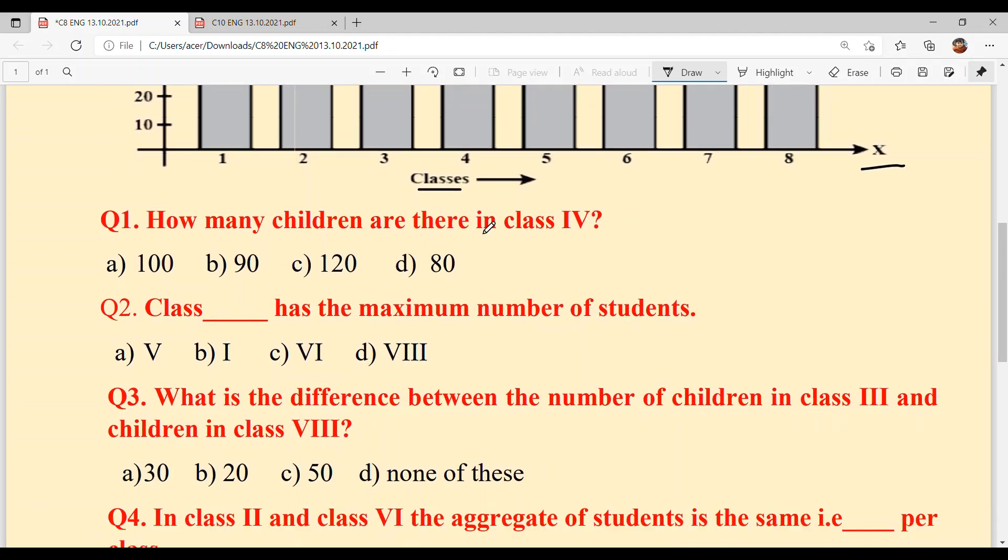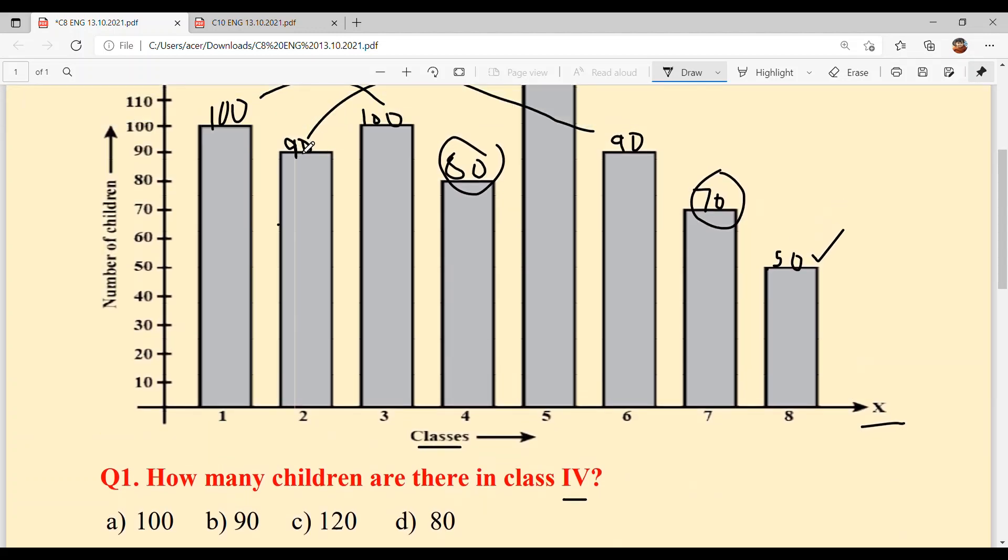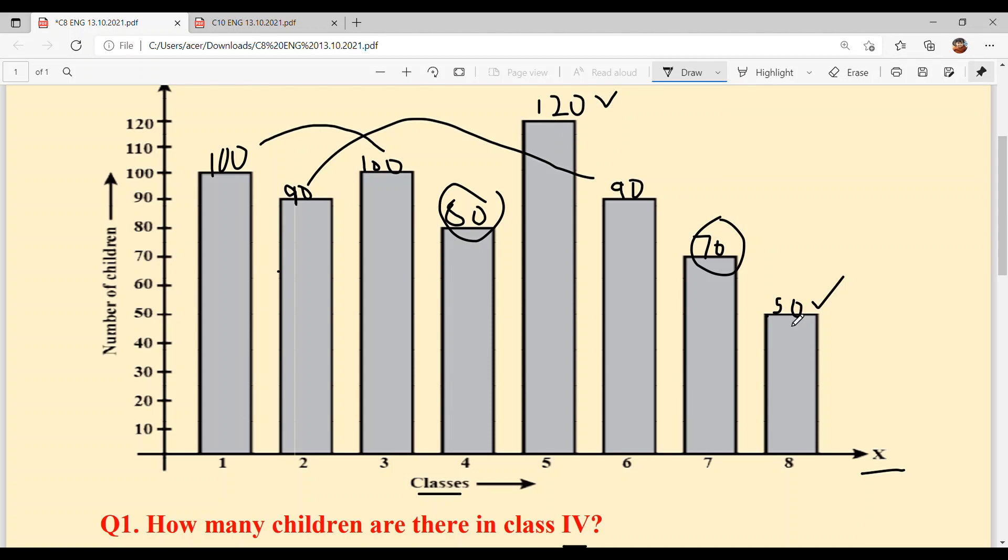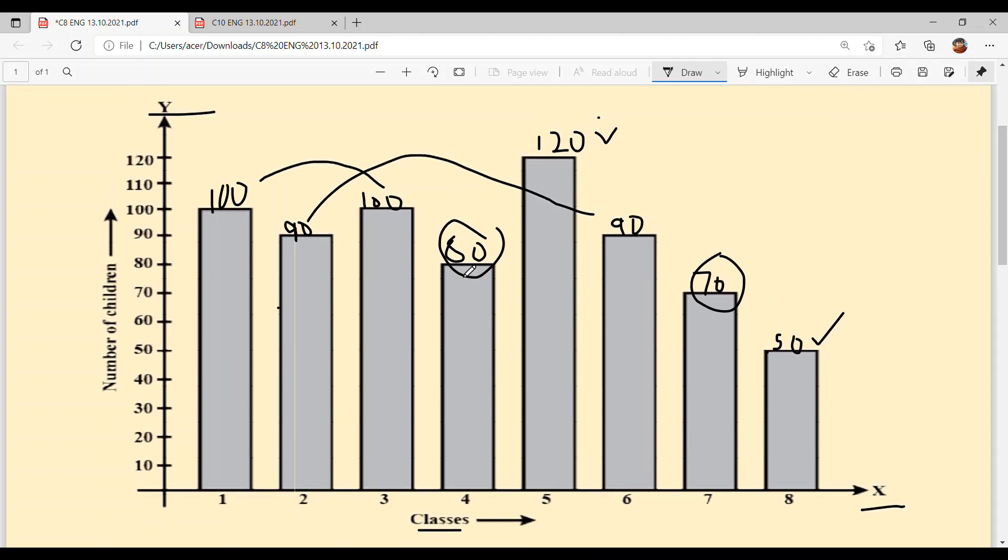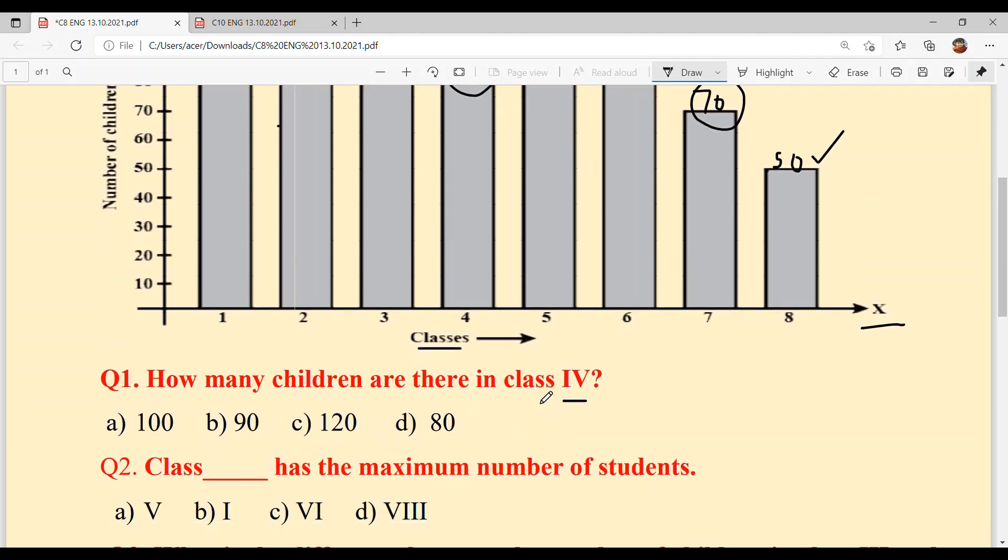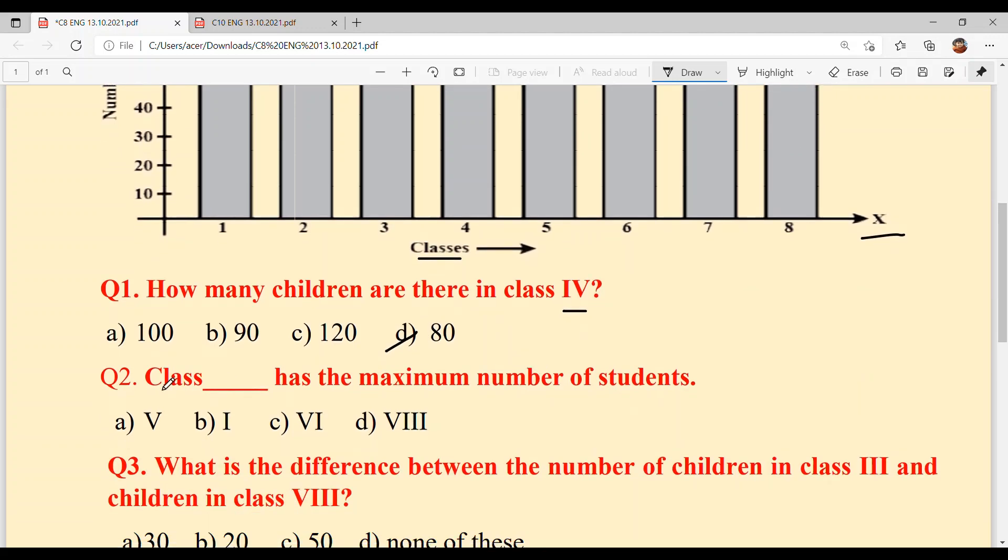How many children are there in class fourth? Make sure you write the numbers on your bar graph so you can easily answer the questions without taking too much time. 80. Option D is your answer.